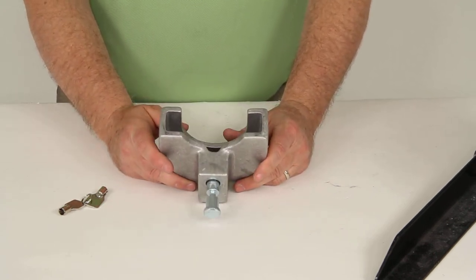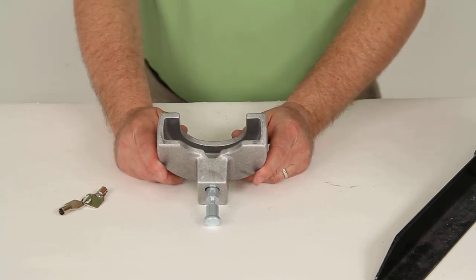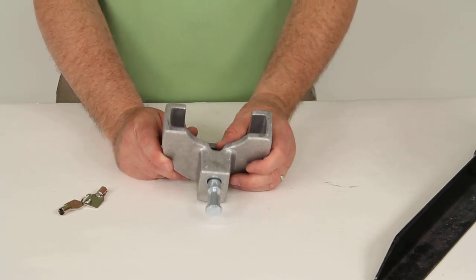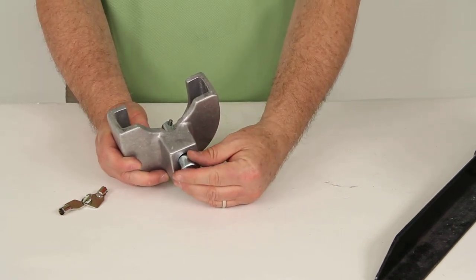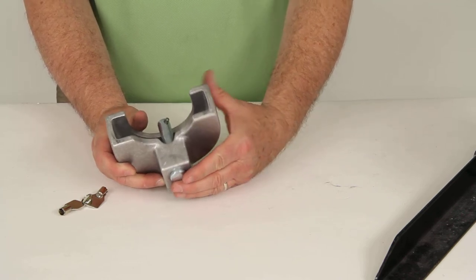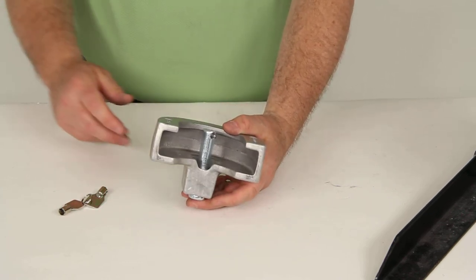And that should do it for the review on part number BLTL-34, the Blaylock Easy Lock Trailer Coupler Lock for 2 and 5/16ths ball couplers with the flat or rolled lip.